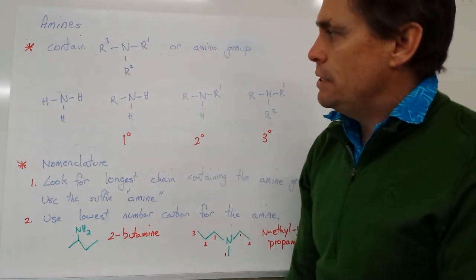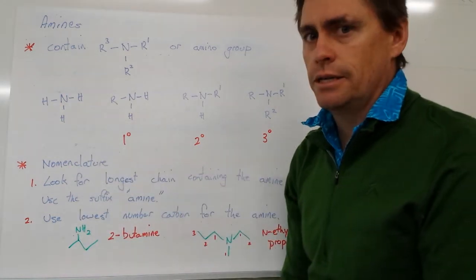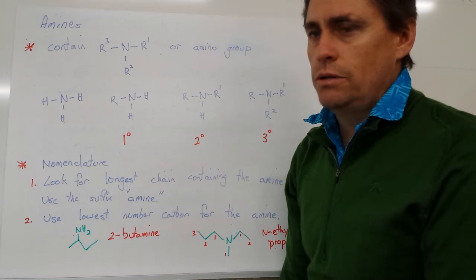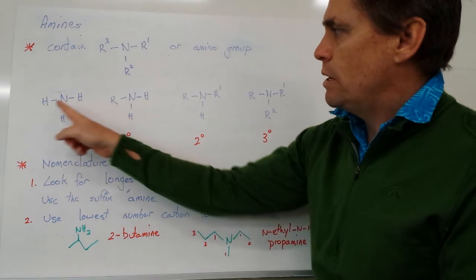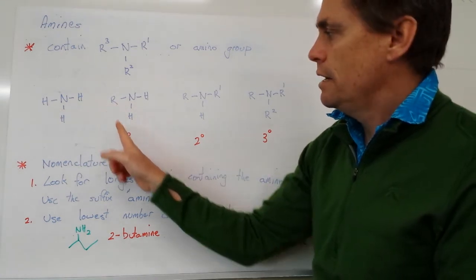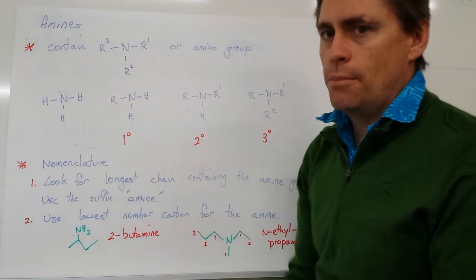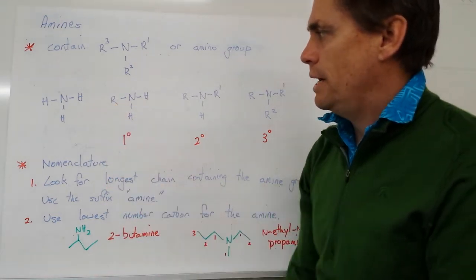So if we have a very simple molecule, our nitrogen attached to three hydrogens, that's an ammonia molecule, it's not an organic molecule. On the other hand, if we replace one of these hydrogens with a carbon, some sort of carbon chain, we form what's known as a primary amine. So if it has one carbon chain, it's a primary amine.